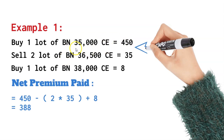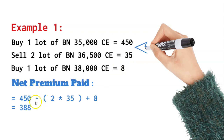For the second leg, I'm choosing a strike price approximately three times more than the amount invested in the at-the-money or in-the-money call. I'm approximating to 500 points, so I'm selling two lots at 1,500 points away at 35 rupees, and buying one lot at another 1,500 points away at 8 rupees. Net to net, the premium paid is 450 minus two times 35 (selling two lots) plus 8, giving a net premium of 388 rupees, as opposed to 450 for a plain vanilla call buyer.